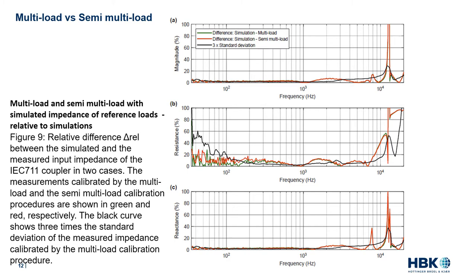Since the measured input impedance magnitude calibrated by the semi-multi-load and multi-load procedures has relatively small discrepancy compared to detailed simulations, and since the standard deviation of the multi-load procedure is small, these procedures seem to give a reliable estimate of the input impedance magnitude of complex structures such as the IC711 coupler in the full audio bandwidth up to 20 kHz, and are expected to do so for measurements in real ears if other necessary precautions are taken.